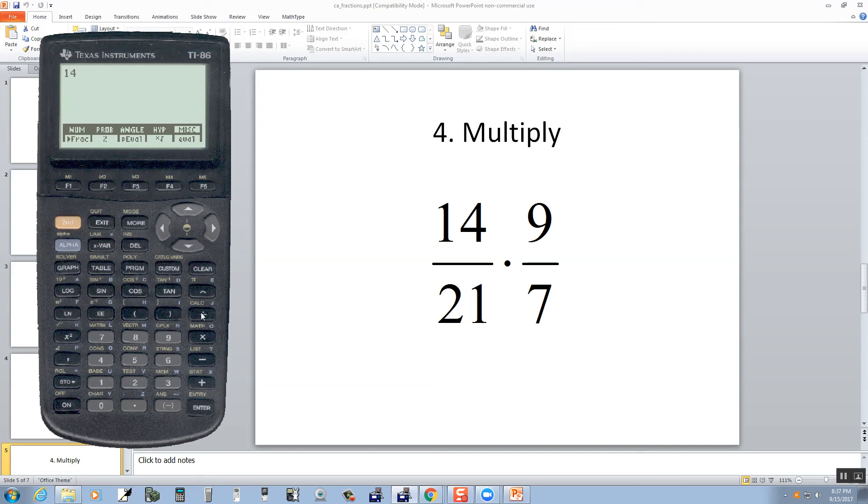I got 14 divided by 21 times 9 divided by 7. And then press enter. If we left this up here, if we know we're going to be working with fractions, then I don't have to go through all those choices. All I have to do is push the F1 below fraction and then press enter.